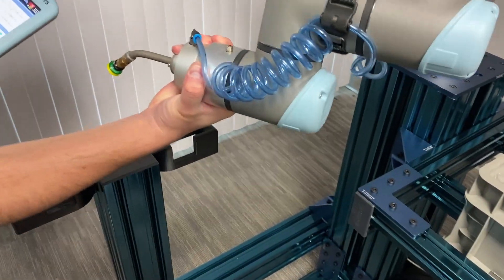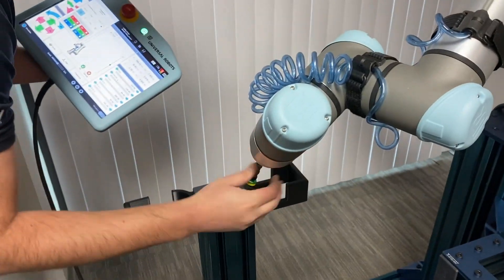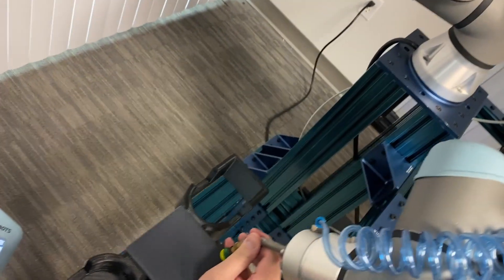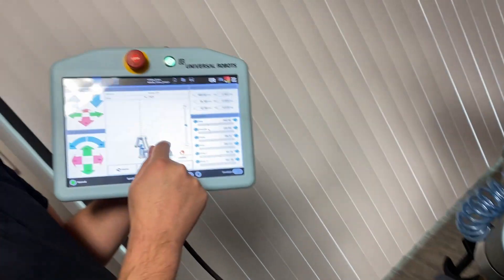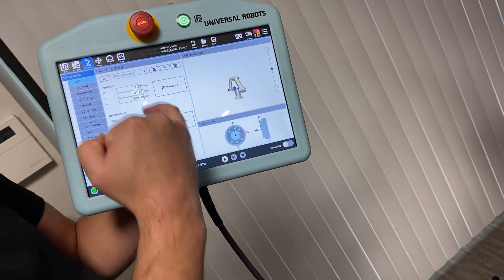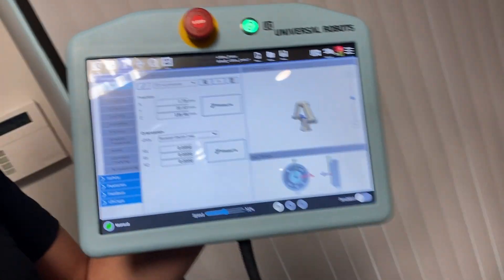And then we'll set point four. How about we give it from maybe the top down here? It looks pretty good. So when we hit set, there we go, we now have our tool center point set.